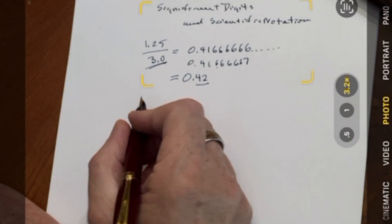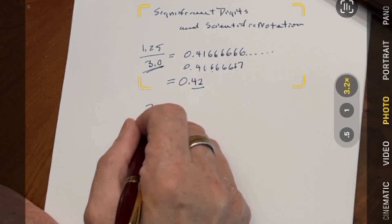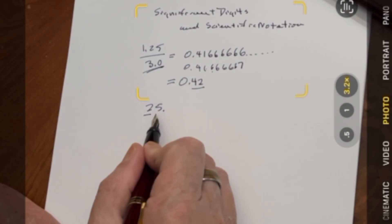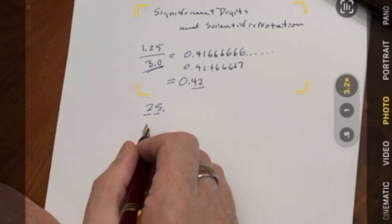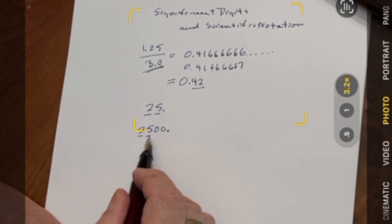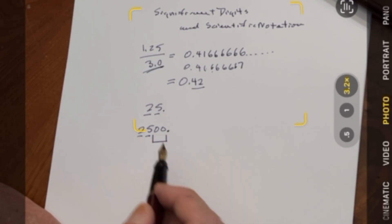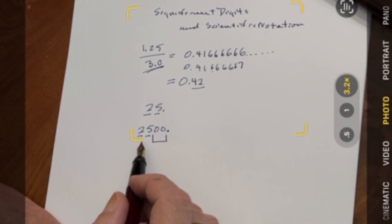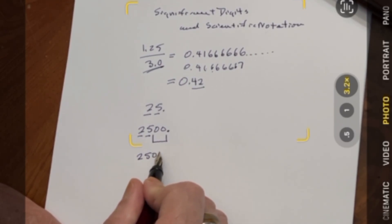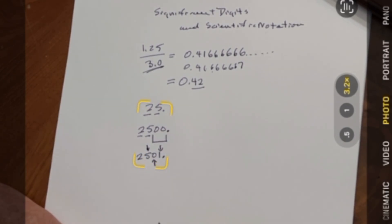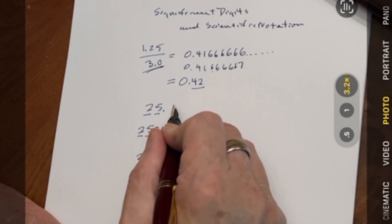What are the rules? If you have a number like 25, both digits to the left of the decimal place are significant — that gives you 2. However, if you have 2500, the 2 and the 5 are significant digits, but the two zeros immediately to the left of the decimal place don't count, so you still only have two significant digits. But what about 2501? That zero is significant because there are significant digits on either side of it, giving you 4 significant digits total.